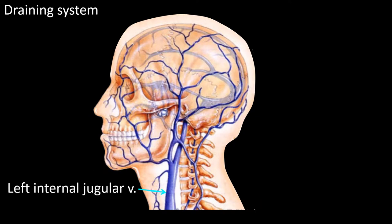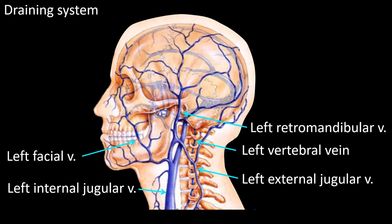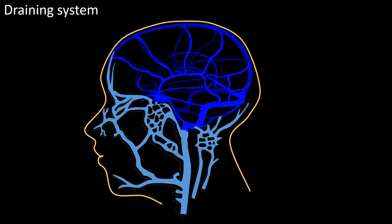Notice the left internal jugular, left external jugular, left vertebral, left facial, and left retromandibular veins. I will now go to a two-dimensional drawing to list these and other components of the draining system. This is a two-dimensional representation of the brain draining system.